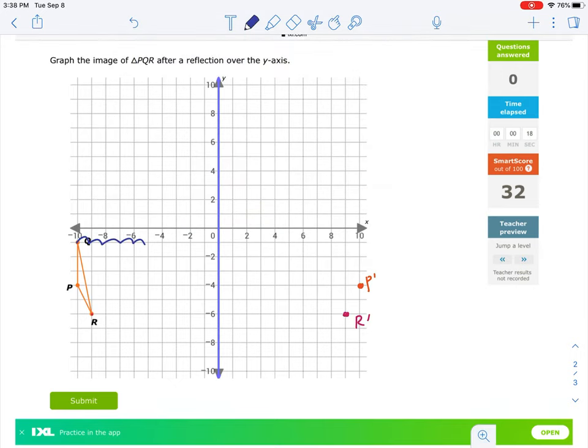And Q is 10 spaces across and 10 spaces down. Q prime is going to land right here.